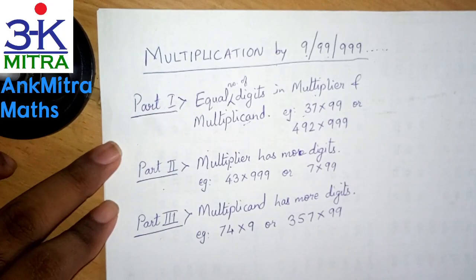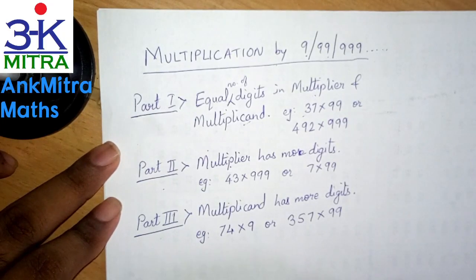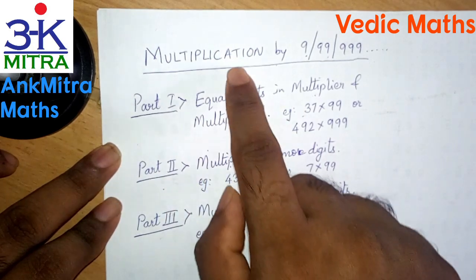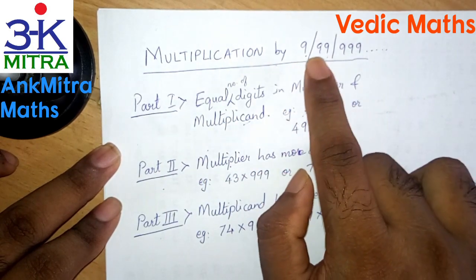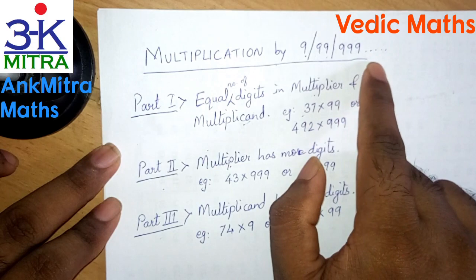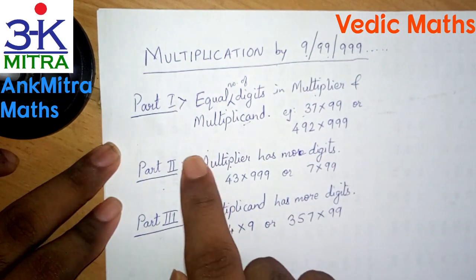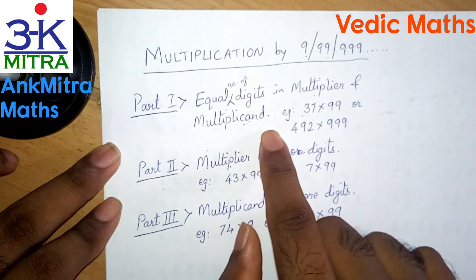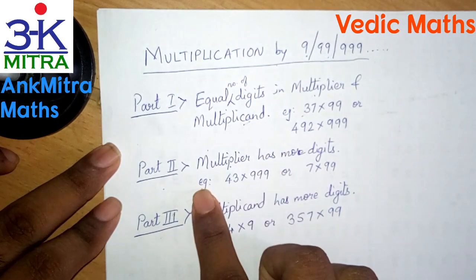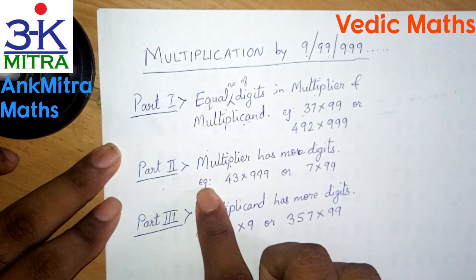Hello everyone. In the previous two videos I have explained Part 1 and Part 2 of this multiplication trick for multiplication by 9, 99, 999 and so on. Part 1 had an equal number of digits in both the multiplier as well as the multiplicand. In Part 2, the multiplier had more number of digits.